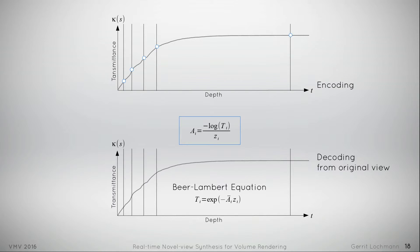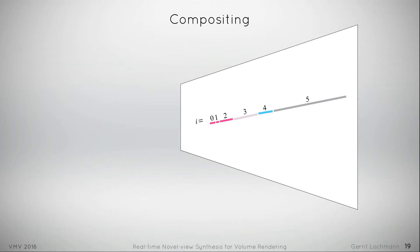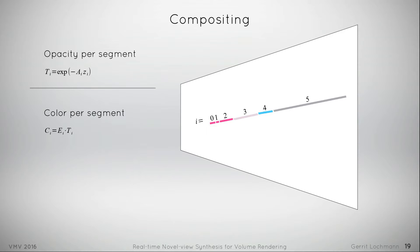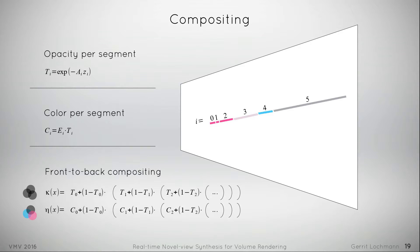On the decoding side, the original transmittance matches the reconstruction at the control points, and most importantly at the rightmost control point. The functions only drift apart between two segment breaks. What counts for the same view, we also apply to a slightly different view, as we assume all pieces are homogeneous matter. We apply the Beer-Lambert equation to receive the opacity and the color for each segment considering its depth, and finally the segments are blended via front-to-back compositing.